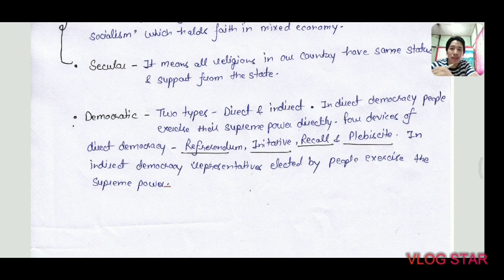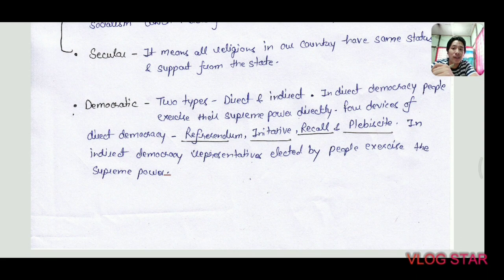Democracy is the government of the people, for the people, and by the people. Democracies are of two types: direct and indirect. In direct democracy, people exercise their supreme power directly, and there are four devices of direct democracy — referendum, initiative, recall, and plebiscite. In indirect democracy, representatives elected by the people exercise the supreme power. In India, it is essentially indirect democracy.